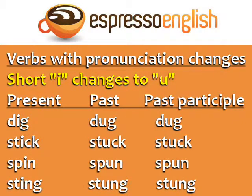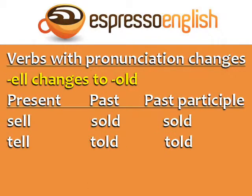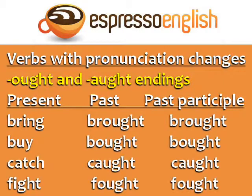Short I can change to U: Dig, dug, dug. Stick, stuck, stuck. Spin, spun, spun. Sting, stung, stung. Two very common verbs, sell and tell, become sold and told in the past and past participle.